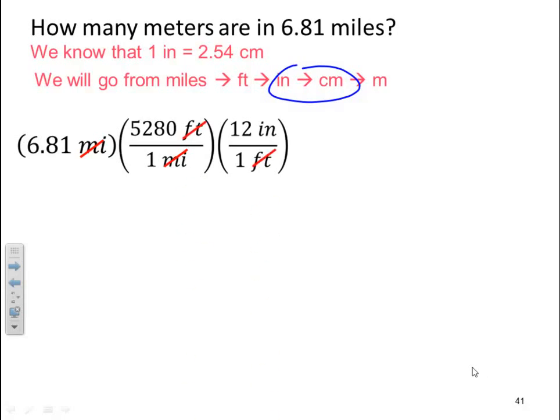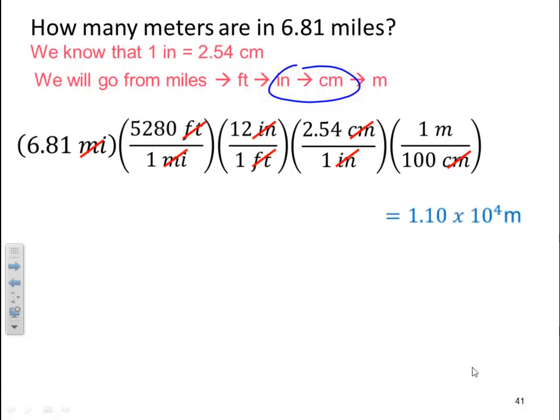And now I'm going to use my bridge. And my inch will be in the denominator because I want it to cancel. So now I'm in centimeters. I need to get to meters. We know that there's a hundred centimeters for every one meter. So my hundred goes in the denominator so I can get centimeters to cancel. And if I multiply everything out, 6.81 times 5280 times 12 times 2.54 times 1, and divide that by 1 times 1 times 1 times 100, we get our answer of 1.10 times 10 to the 4 meters.